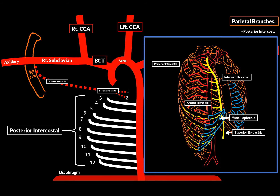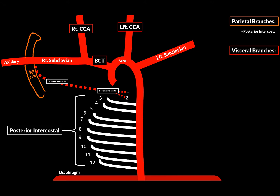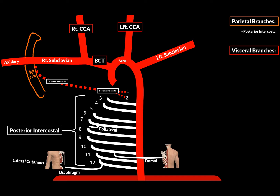The posterior intercostal arteries do have side branches, and each one will give off the same side branches. The first is the collateral branch, originating from the costal angle, and supplies the structures in its own intercostal space and the skin. The next is the lateral cutaneous branch for the skin of the lateral and the anterior part of the trunk. Then there's the dorsal branch for the skin and the deep muscles of the back, which also has some side branches supplying the spinal cord. There is one more branch, but this one is only for females, arising from the fourth to sixth posterior intercostal arteries to supply the mammary glands — these are the lateral mammary arteries.